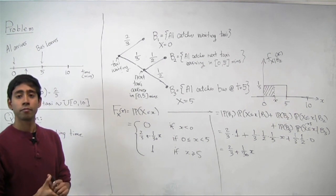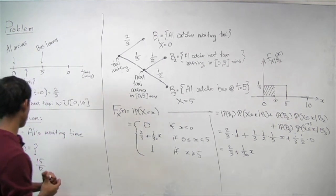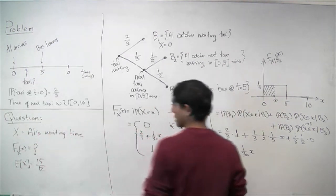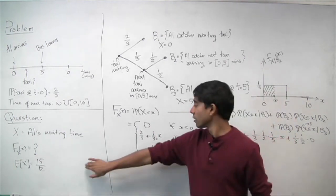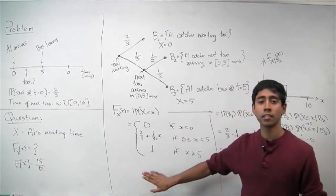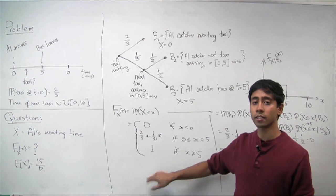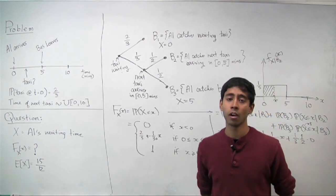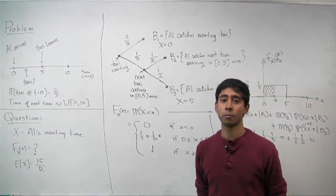So we've finished the problem. We computed the expected value E[X] = 15/12, and the CDF: F(x) = 0 for x < 0, F(x) = 2/3 + x/30 for 0 ≤ x < 5, and F(x) = 1 for x ≥ 5. This was a great illustration of how to handle a mixed random variable.